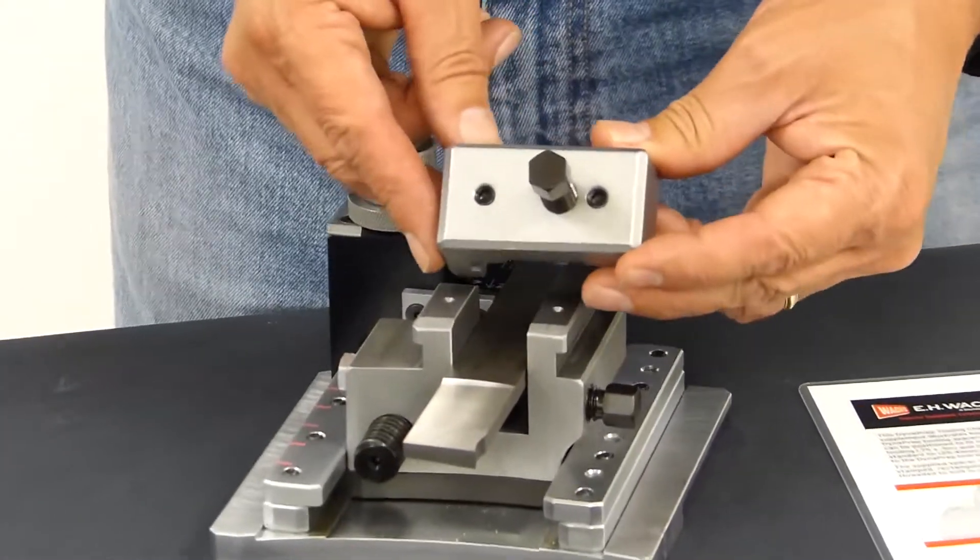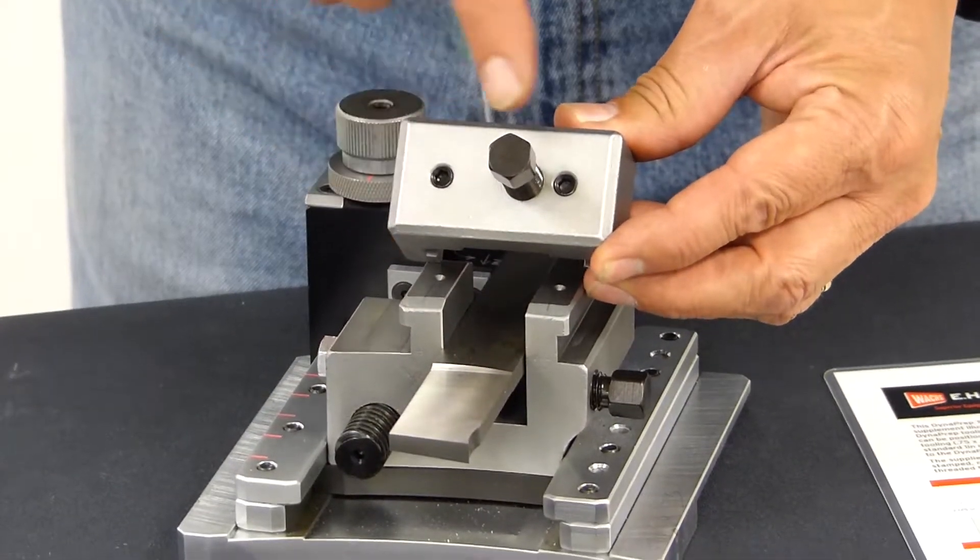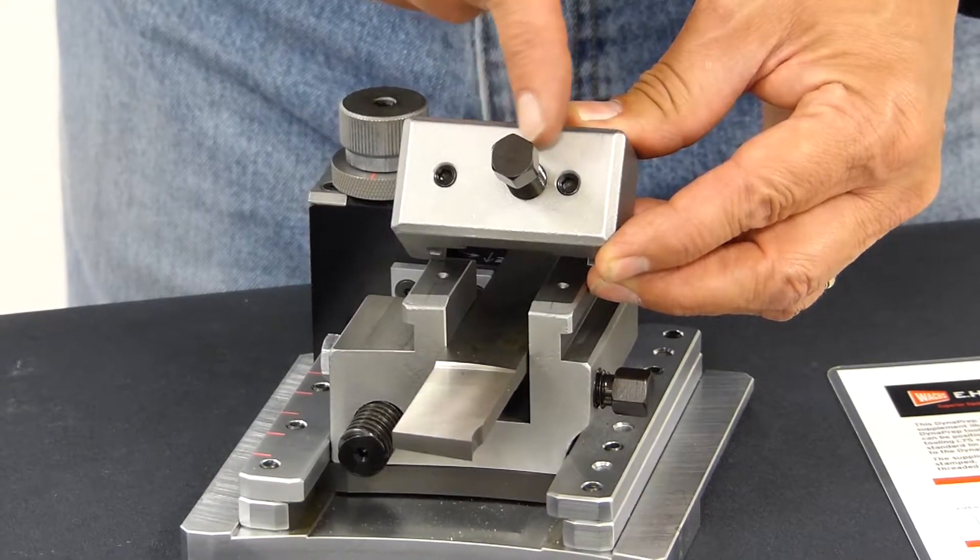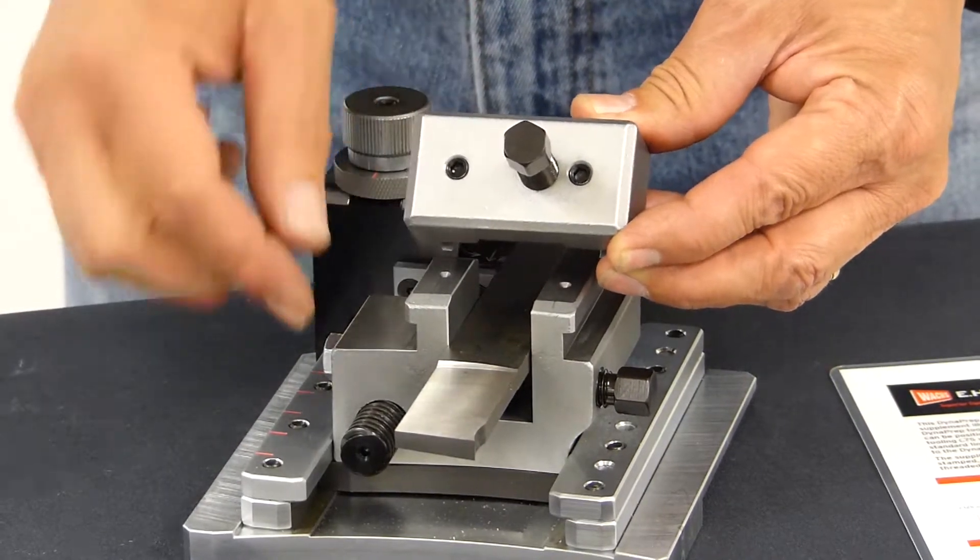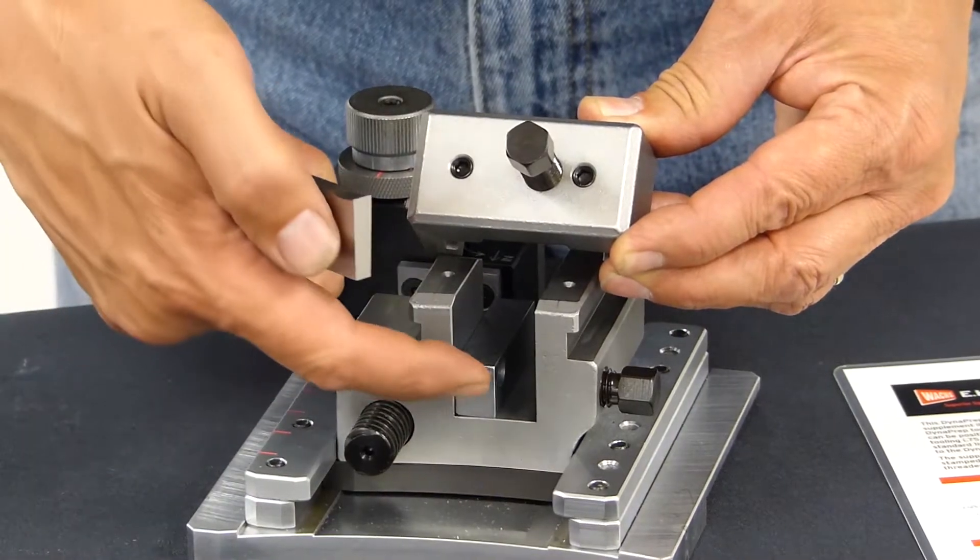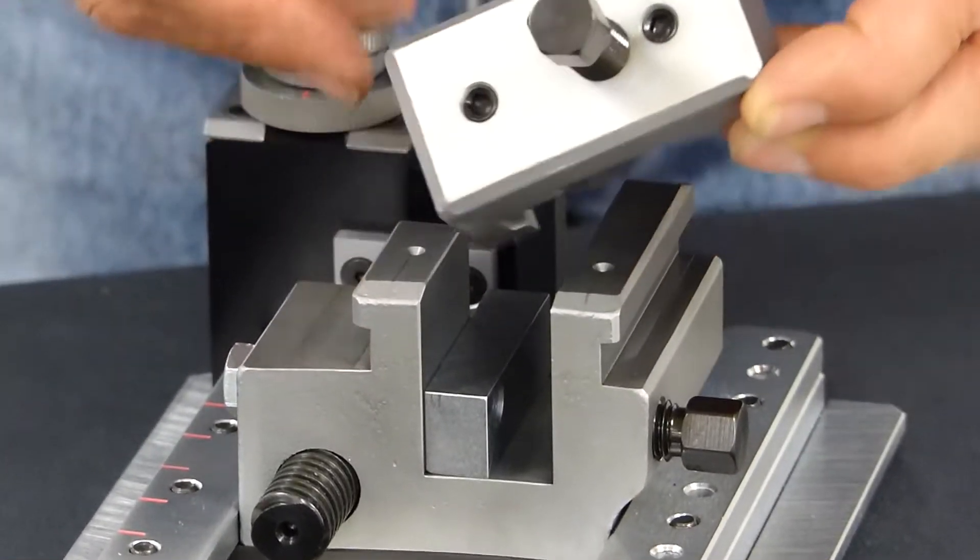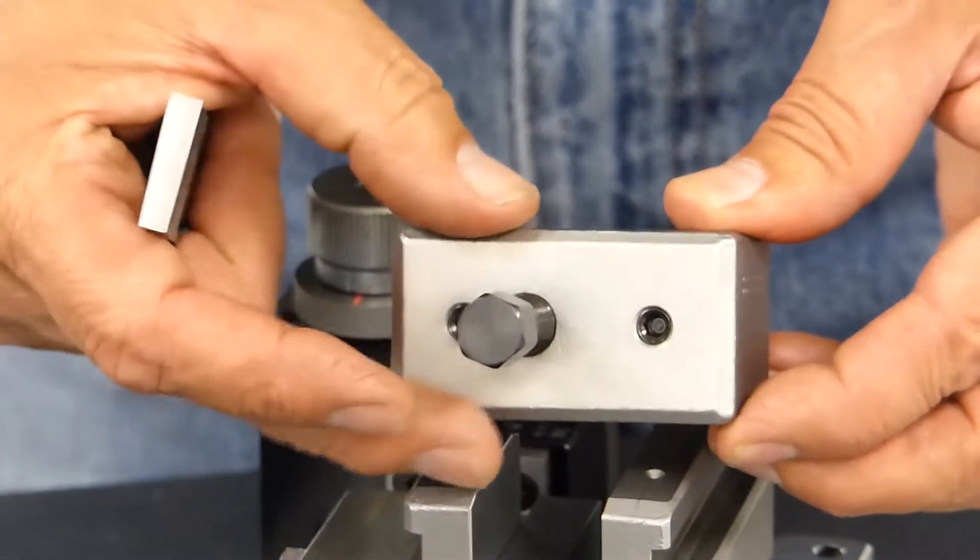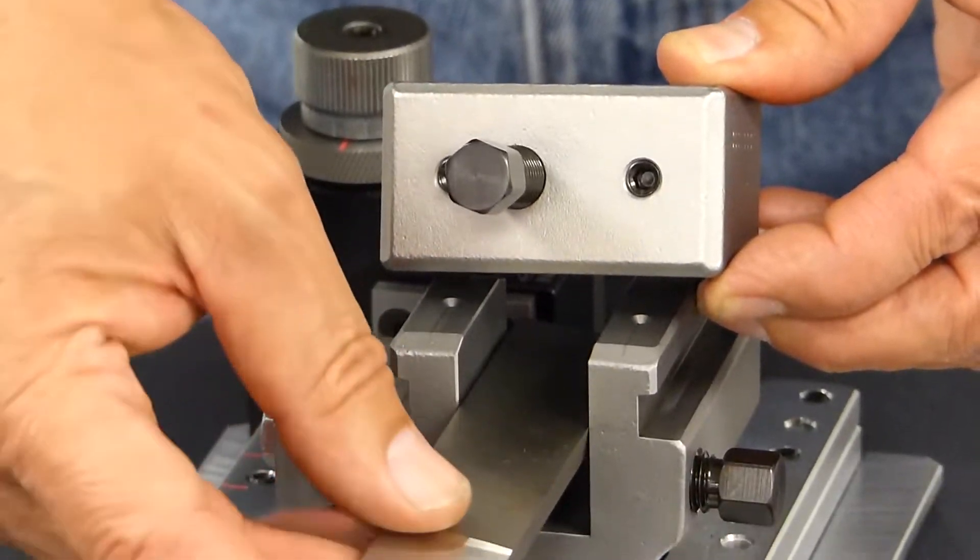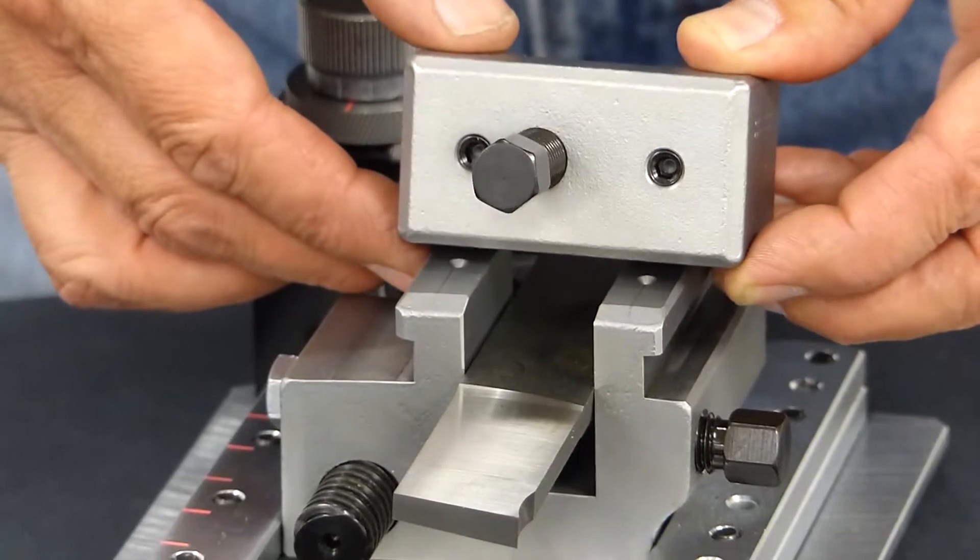One thing to recognize is that the locking screw is offset from center. As you can see, our block support is on one side. So when double parting, we want to flip our block around so that when we tighten the clamp screw, it's over the support.